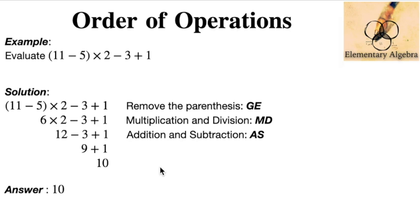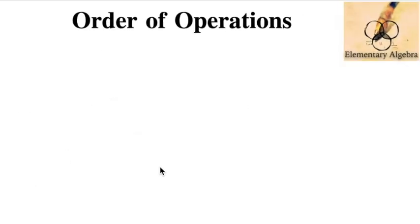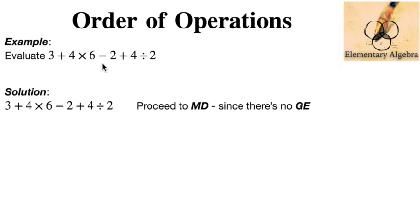For this next example, we will evaluate 3 + 4 × 6 - 2 + 4 ÷ 2. Let's follow the solution. Since you can see, one can observe that there's no parenthesis here, so let's proceed to MD, multiplication and division, and then addition subtraction from left to right.